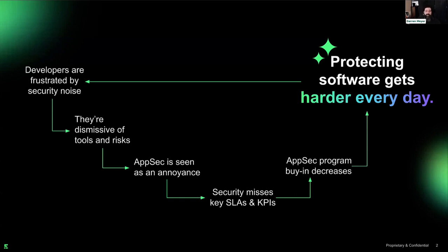That tends to bleed over into the AppSec team that recommended the tools. They start to be annoyed with us. We can make it harder and harder to work with us because we're just seen as the sayers of no or the people who are dumping all this work on them. We miss our SLAs and KPIs, so we get less buy-in from leadership, less funding, it's harder to buy the next tool — and the problem keeps getting harder. So we get stuck here all of the time.